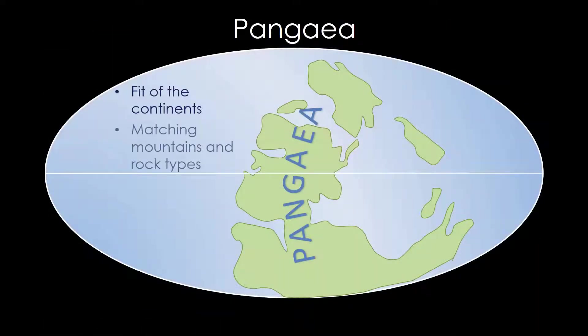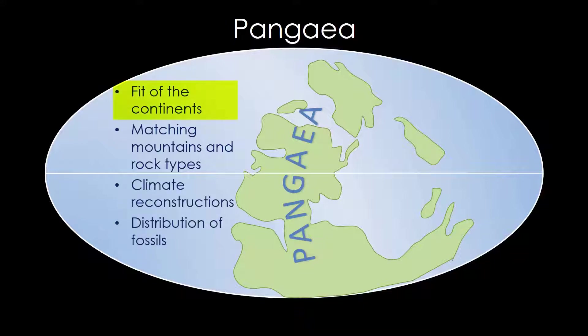Wegener had four main lines of evidence in support of continental drift. These included the fit of the continents, the match of mountain belts and ancient rocks, indications of past climates, and the distributions of fossils.